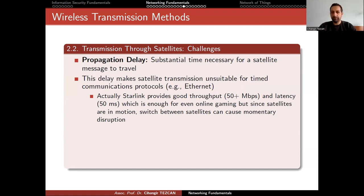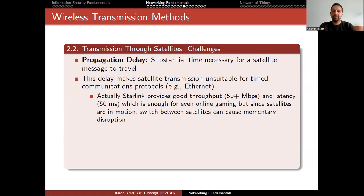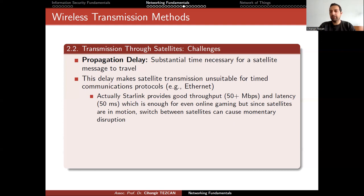Since satellites are in motion, your satellite dish is a little bit clever. As the satellite moves, your dish also rotates slightly to keep communication with the satellite. When the satellite goes over the horizon, the dish turns the other way around to connect to another satellite. This kind of switch between satellites can cause momentary disruption. If you are using it for regular internet purposes, you probably wouldn't notice it, though it wouldn't be suitable for online gaming in that moment.